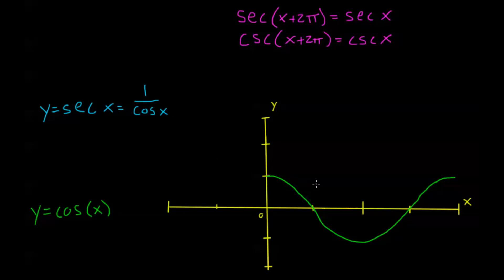So anywhere that cosine is equal to 0, I'm going to have an asymptote, because secant is going to be 1 over 0, or in other words, it does not exist here.